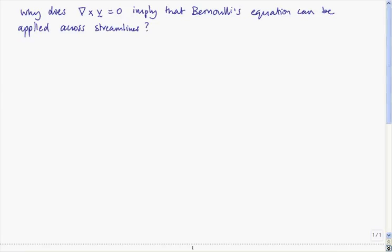So why does curl v equals zero imply that Bernoulli's equation can be applied across streamlines as well as along streamlines? To consider this, we'll think about the forces and acceleration around a fluid blob. The mass per unit volume, rho, times the acceleration dv by dt of a fluid blob is equal to minus grad p. Those are the pressure forces on the fluid blob causing acceleration, and that's Euler's equation.